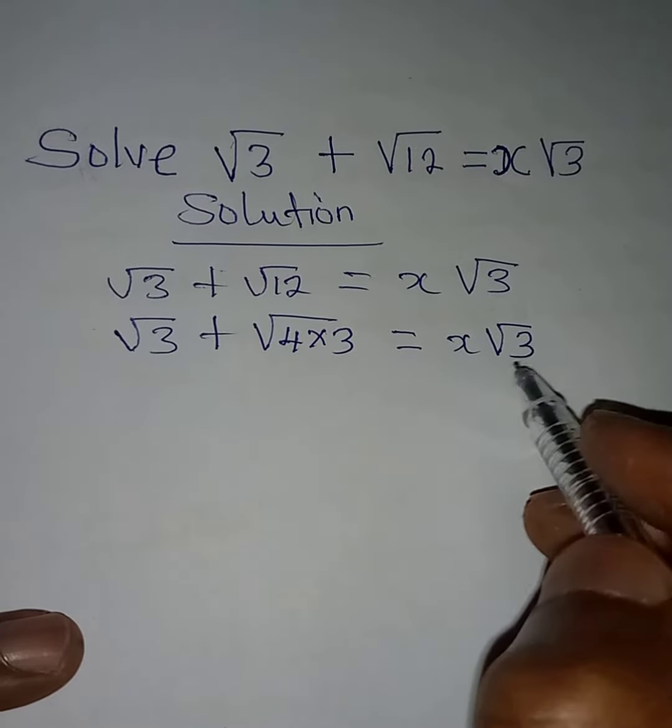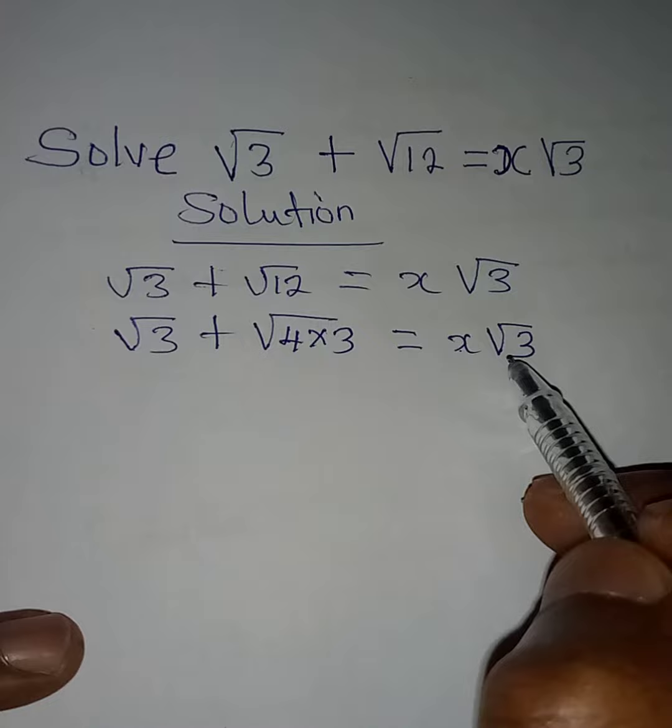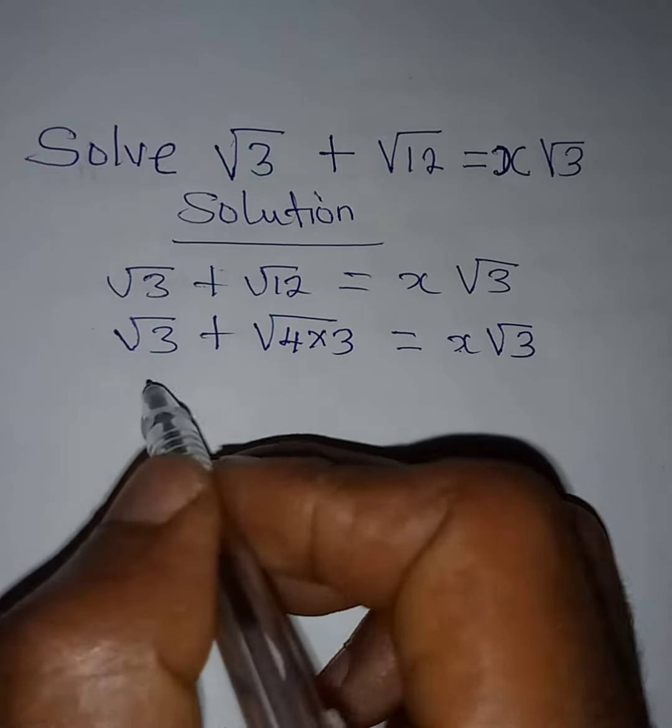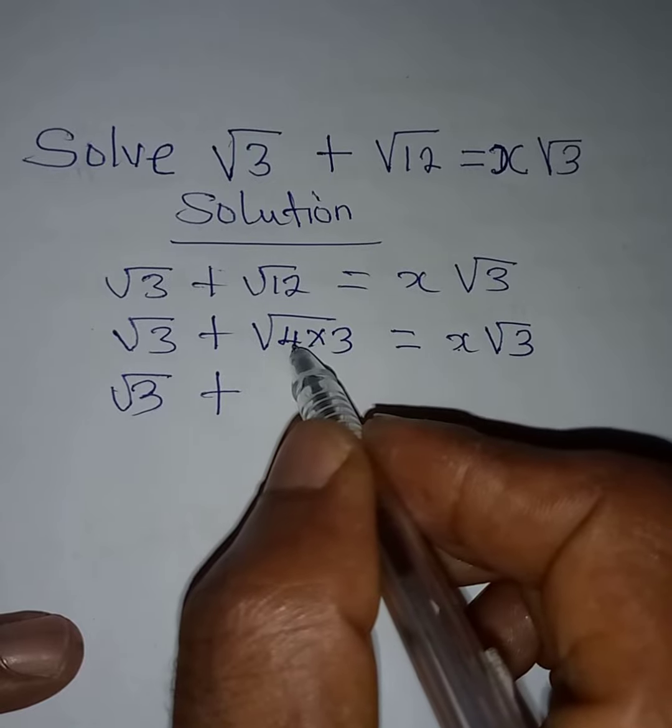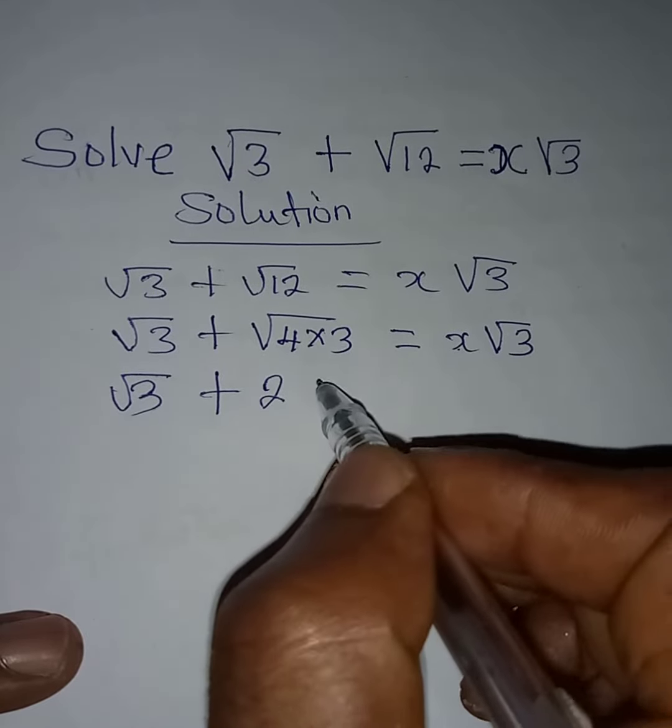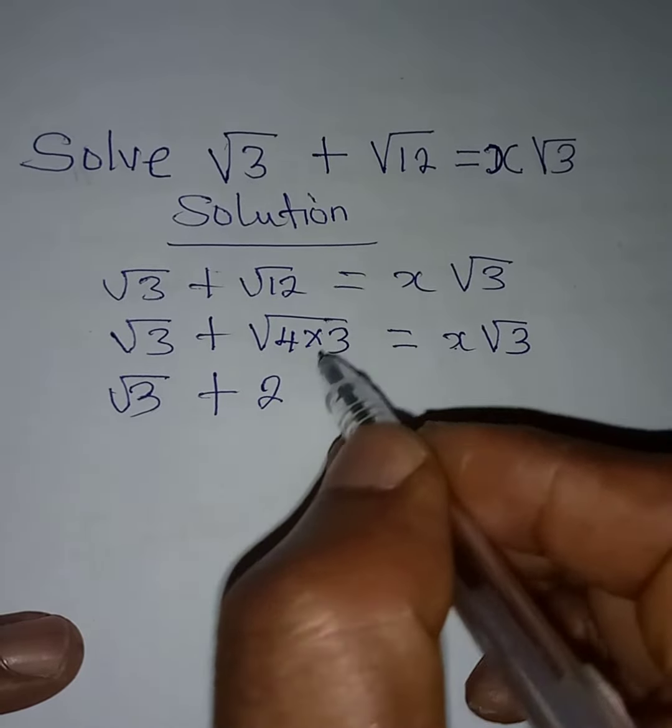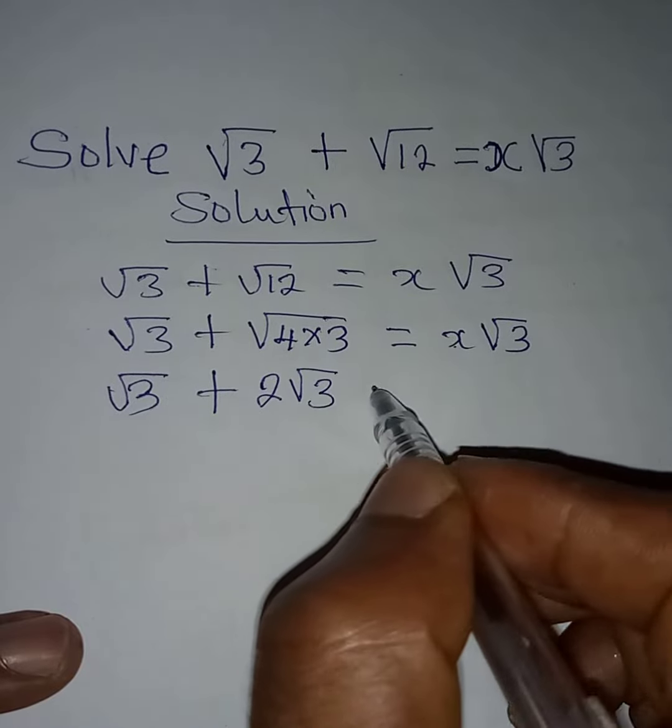This x√3 means x times √3. Now remember this is going to be √3 plus the square root of 4 here is 2, then multiply by √3, so I'll have 2√3. This is equal to x√3.